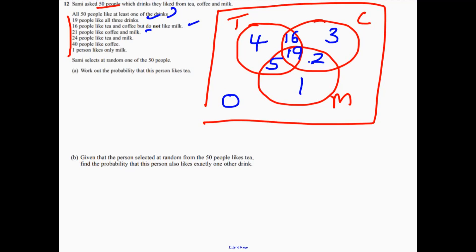What was the question here? Work out the probability. So if we select one person at random, work out the probability that this person likes tea. Well, how many people like tea? If you add up the tea circle, it's 44.